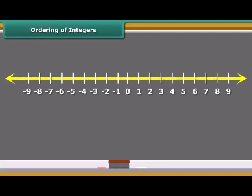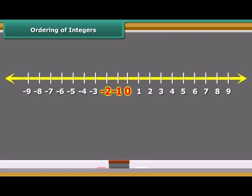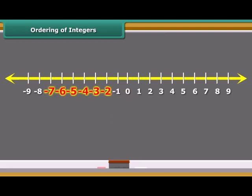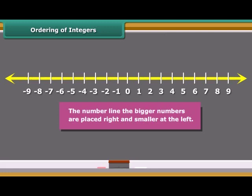Let us observe the integers represented on the number line. We know that 9 is greater than 5, and on the number line, 9 is 4 points to the right of 5. Similarly, 5 is greater than zero, so it is placed to the right of it. Since zero is to the right of minus 2, it is greater than minus 2. Again, minus 2 is to the right of minus 7, so minus 2 is greater than minus 7. Thus, on the number line, bigger numbers are placed to the right and smaller numbers to the left.